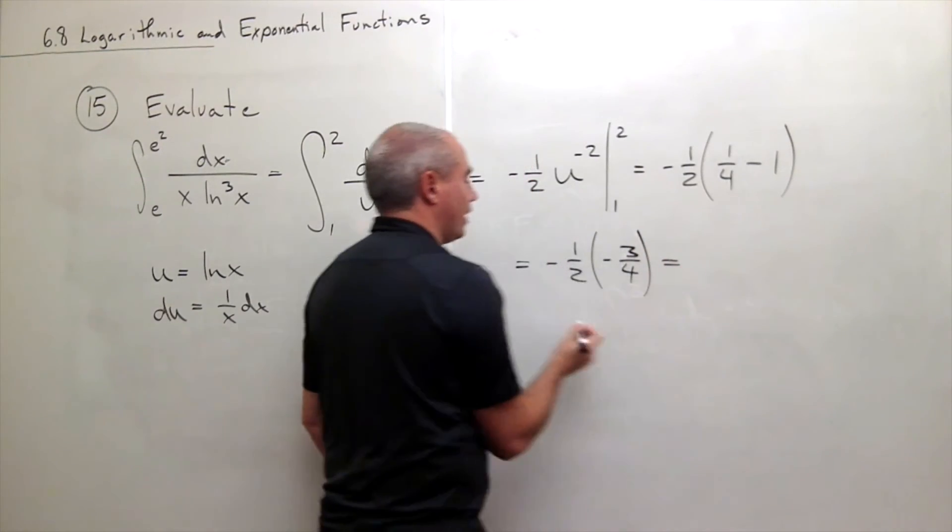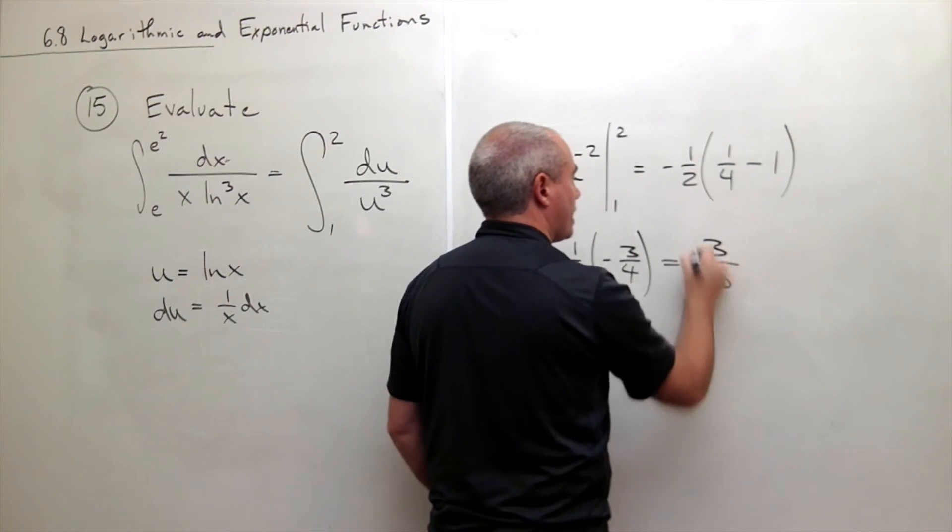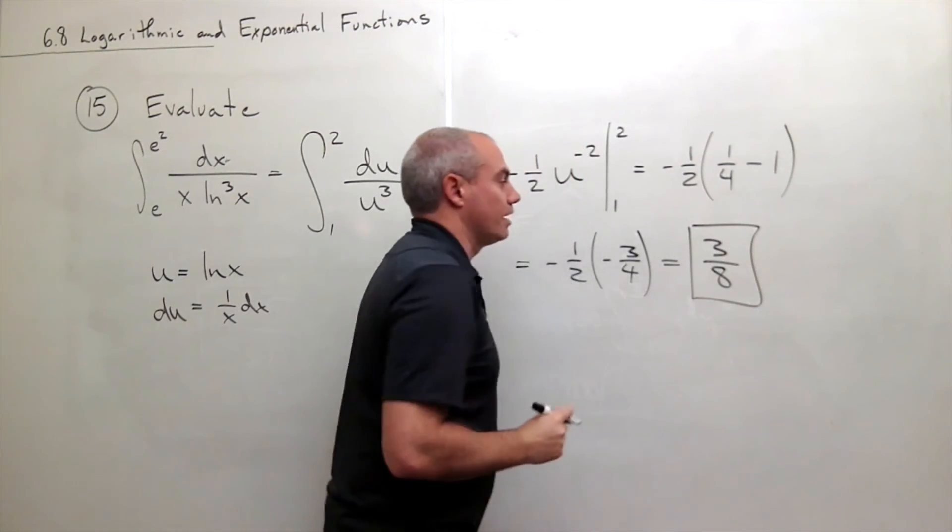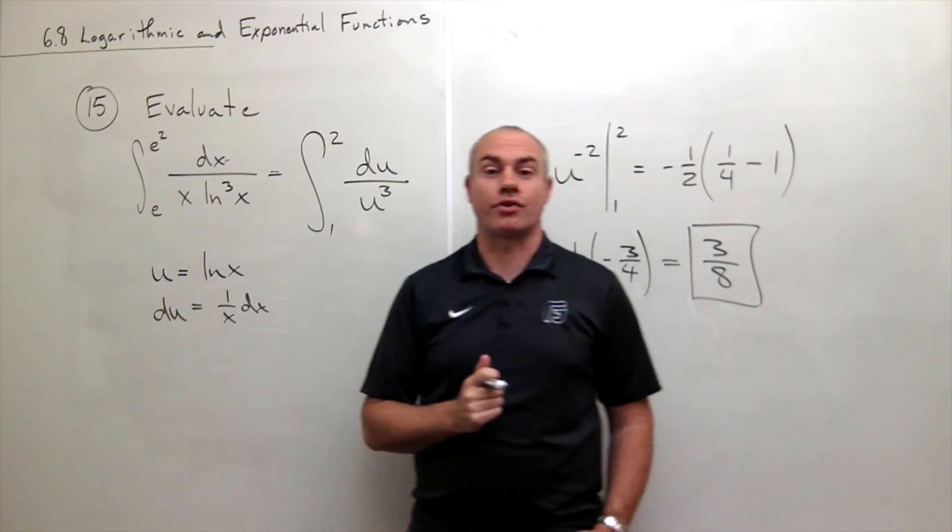And so we're left with negative times negative is a positive and I get 3 over 8. And so the answer to this definite integral is 3 eighths.